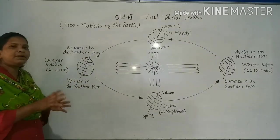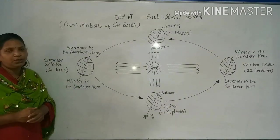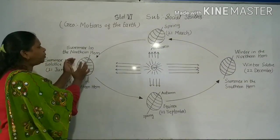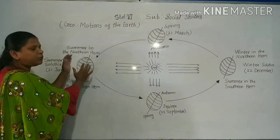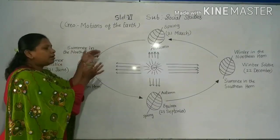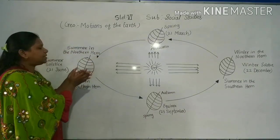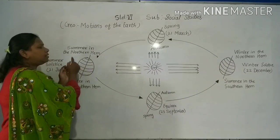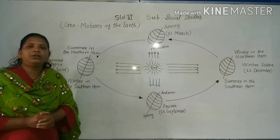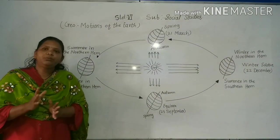So when does summer solstice occur? On 21st June, the north pole is tilted towards the sun, the area gets more light and sun rays, and the Tropic of Cancer receives maximum heat on that day.